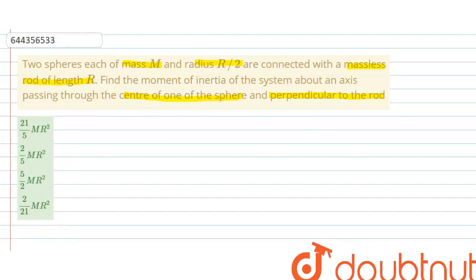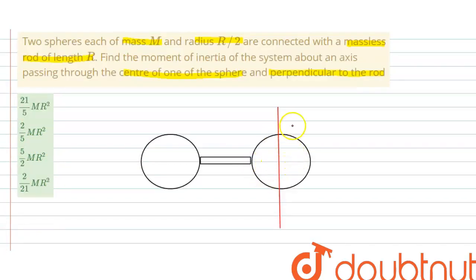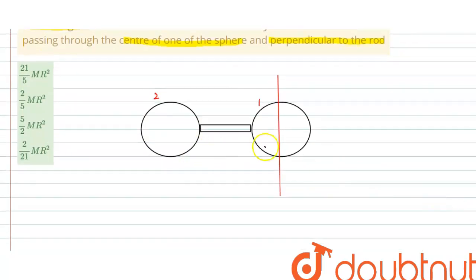Let me draw the diagram first. This is the situation: this is sphere 1, this is the rod, and this is sphere 2. The rod is massless, so there is no moment of inertia for this rod. We have to find the moment of inertia of sphere 1 and sphere 2 about this axis, and then we will combine both values.